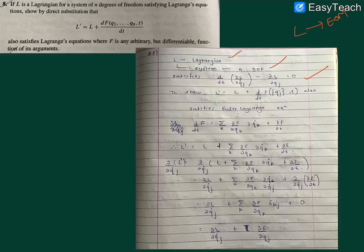We have to show that L prime, which is represented by L plus the total derivative of F, which is a function of generalized coordinates and time. So basically what we have to show...